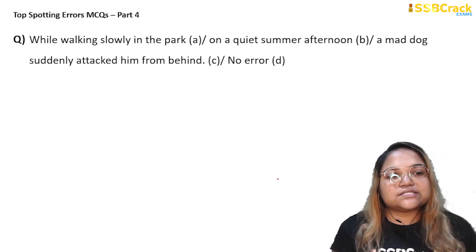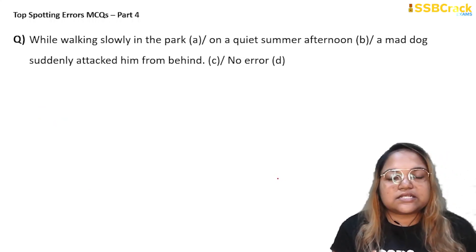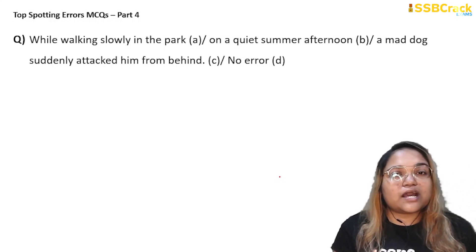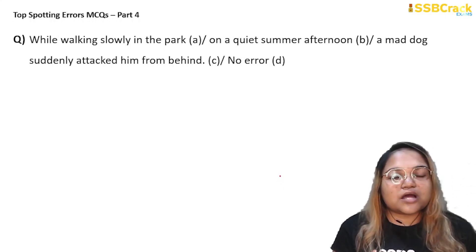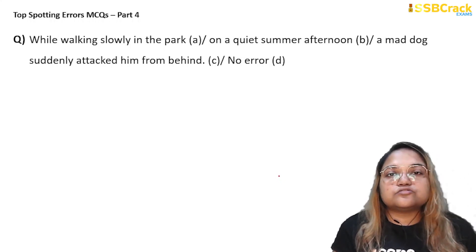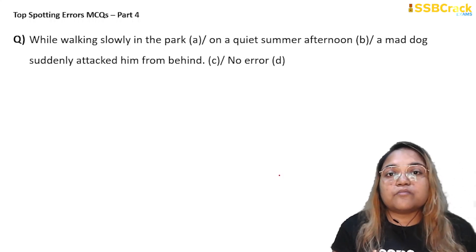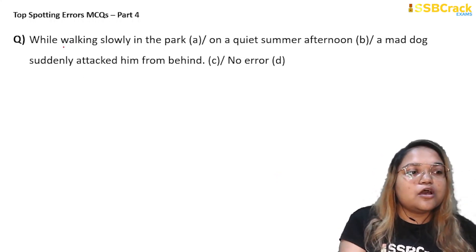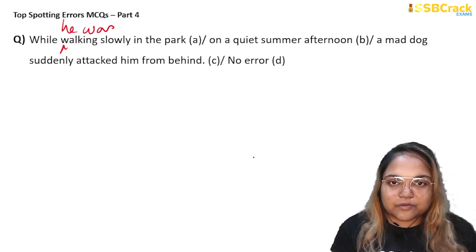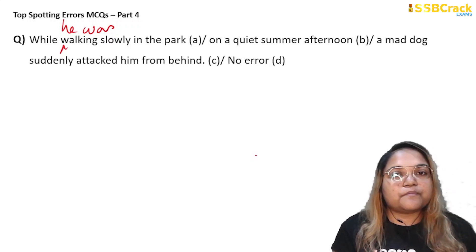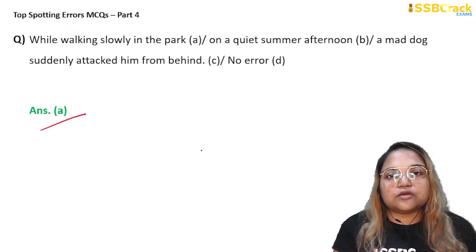Next question: 'While walking slowly in the park on a quiet summer afternoon, a mad dog suddenly attacked him from behind.' At first there seems to be no error, but if you translate the sentence, it implies the mad dog was walking slowly in the park — which is wrong. The true subject is missing from the participial phrase. When a sentence starts with a verb+ing phrase and the true subject is absent, the following subject is taken as the doer. To fix this: 'While he was walking slowly in the park on a quiet summer afternoon, a mad dog suddenly attacked him.' Answer: option A.